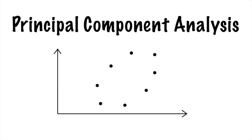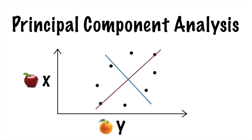Principal component analysis is a linear transformation of data. Right now, our data is being measured on these xy axes, which could be, for example, apples purchased and oranges purchased. To perform PCA, you determine the axes along which the data varies the most, which are the dominant eigenvectors of the covariance matrix we found before. And, since these eigenvectors come from a symmetric matrix, they will always be orthogonal to each other.